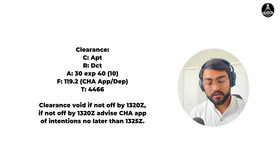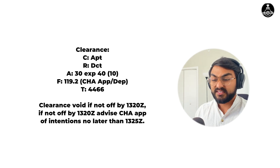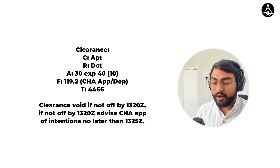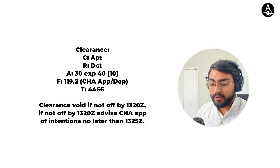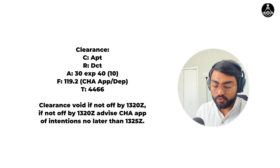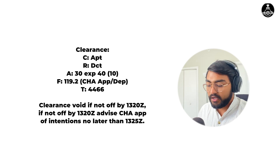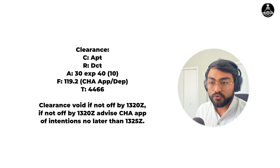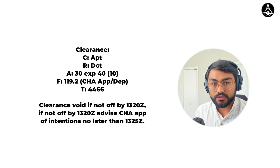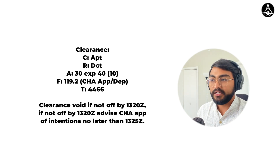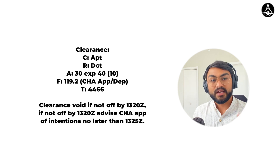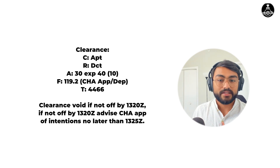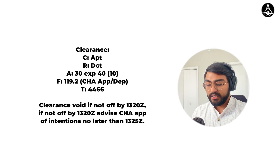November 2-4 Papa Alpha, you are cleared to the Huntsville Executive Tom Sharp Jr. Field via direct. Climb and maintain 3,000. Expect 4,000 ten minutes after departure. Departure frequency is 119.0.2. Transponder code 4466. Clearance void if not off by 1320 Zulu. If not off by 1320 Zulu, advise Chattanooga approach of intentions no later than 1325 Zulu. So our clearance void time is 1320, and the time to report intentions is 1325 Zulu.